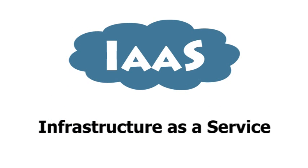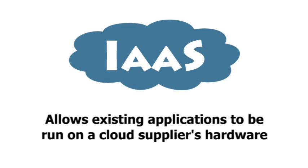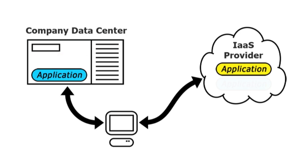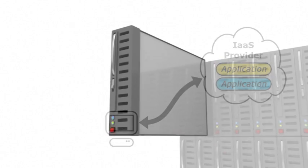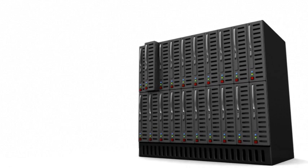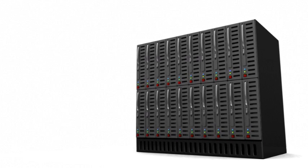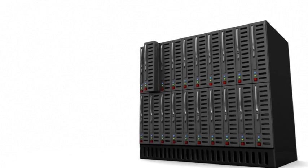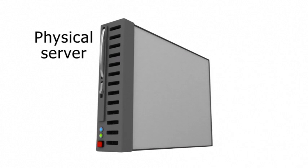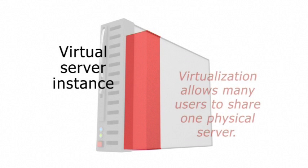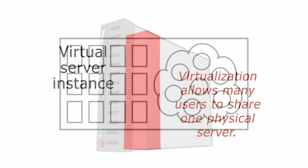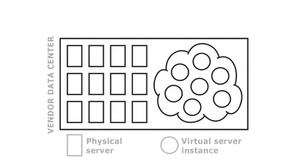Infrastructure as a Service, or IaaS, allows a business to run whatever applications it requires on a supplier's cloud hardware. This means that existing applications can be migrated from a company data center in order to reduce IT costs. The fundamental unit of cloud infrastructure is the server. Today servers can be physical or virtual. Physical servers are discrete individual computers. In contrast, virtual server instances are software-controlled slices of real physical servers that are shared amongst many users via a process called virtualization. Depending on the types of servers involved, IaaS comes in four categories.